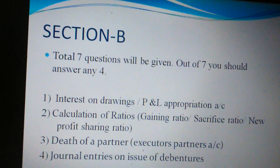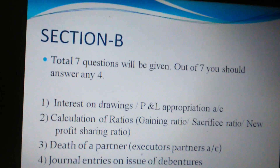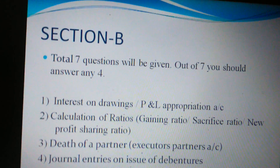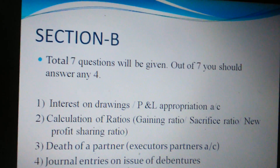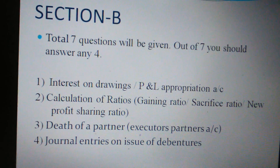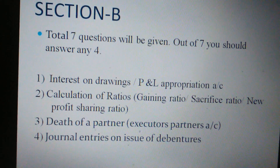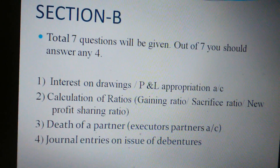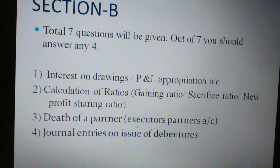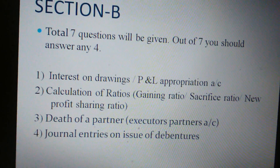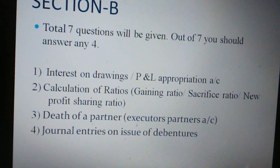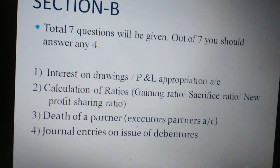In Section B, a total of seven questions will be given; you should answer any four. They'll be in this order: the first one will be interest on drawings or profit and loss account — one of these two will be given. Next is calculation of ratios, where gaining ratio, sacrifice ratio, or new profit sharing ratio will be given.